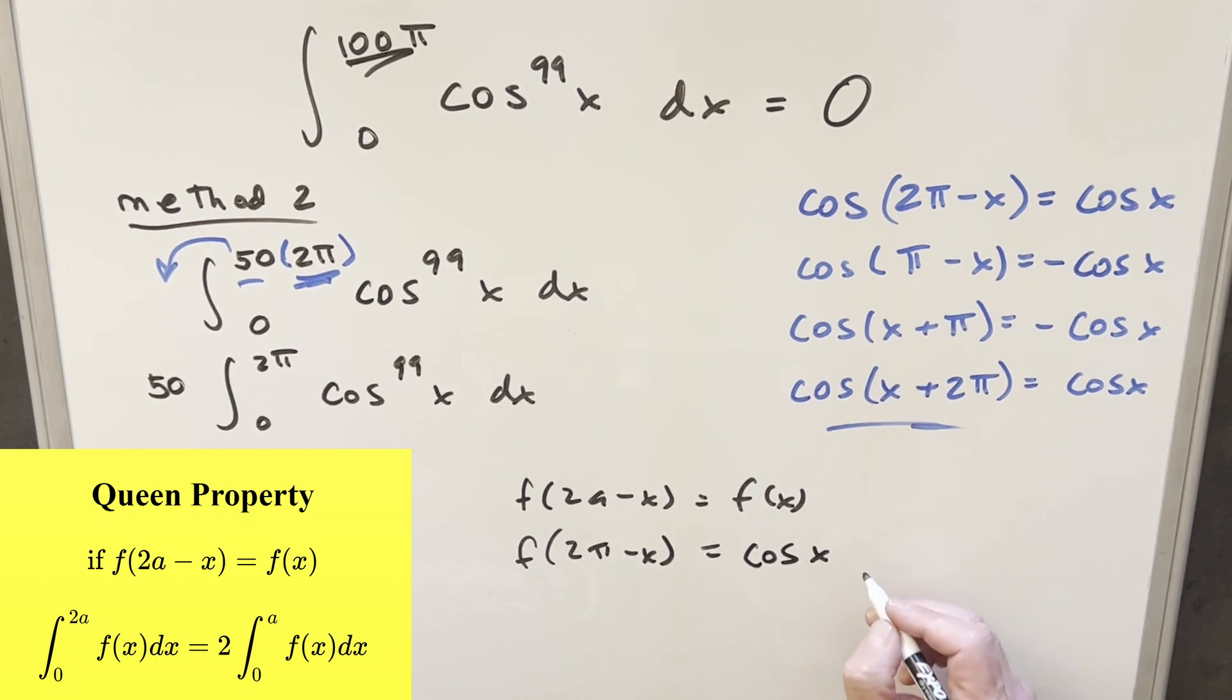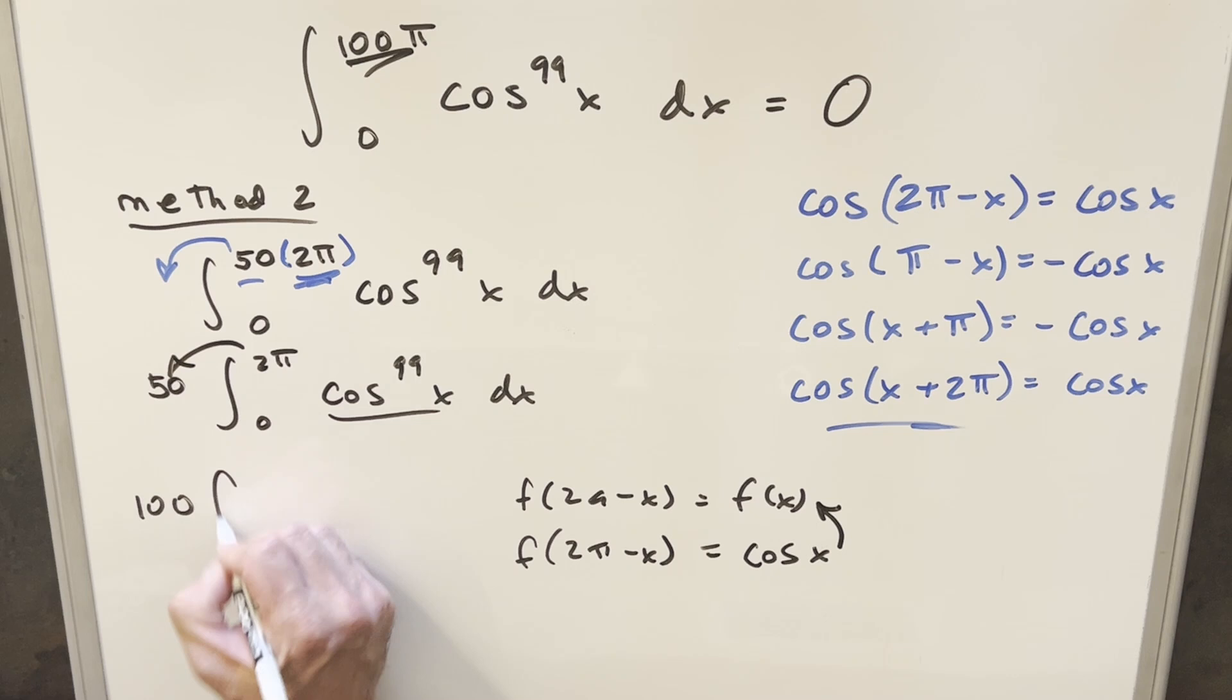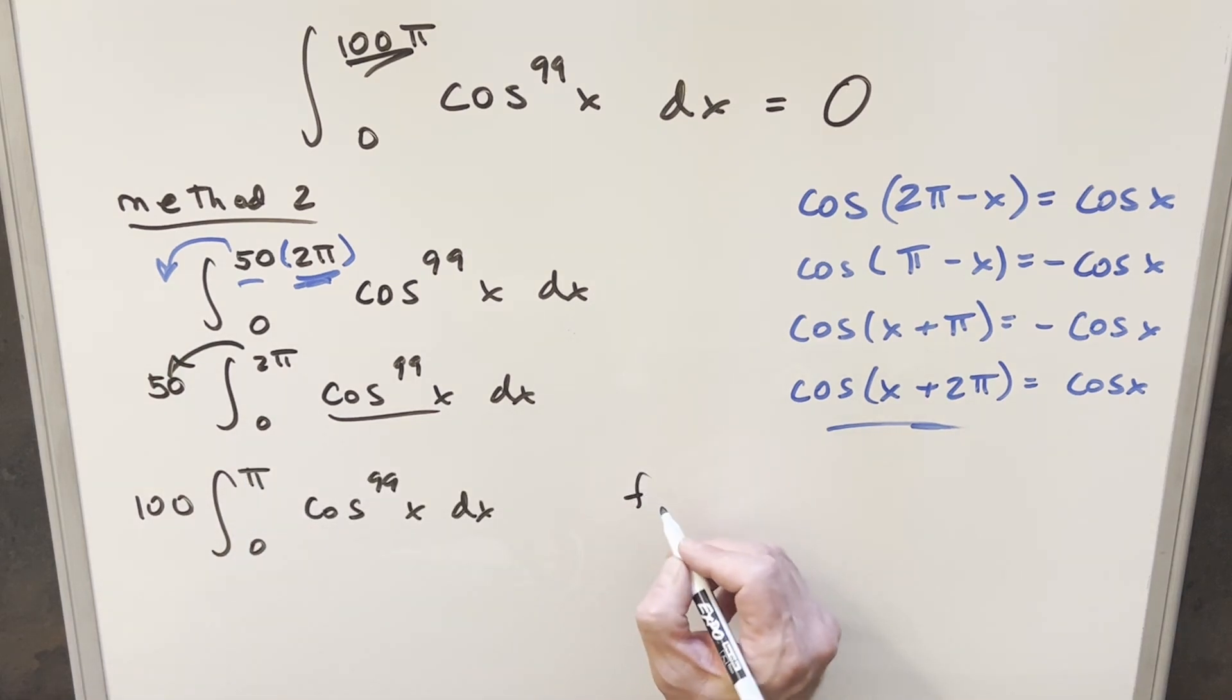When you do the same thing and raise this to the 99th power, you're getting back this f of x value again. So we can now take a 2 out front of the integral. Now we have 100 in front. And then here we can just use King's principle again.